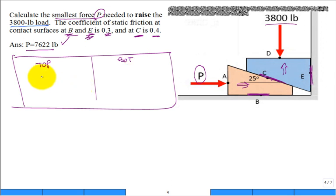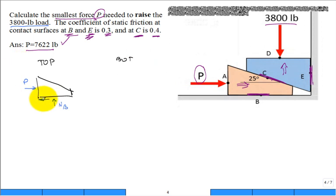I'll put the bottom over here. Don't forget our force P to make things happen, don't forget our normal at B, then we have our friction force at B, then the normal at C - it's not vertical, it's perpendicular to that surface, that's why it's normal.